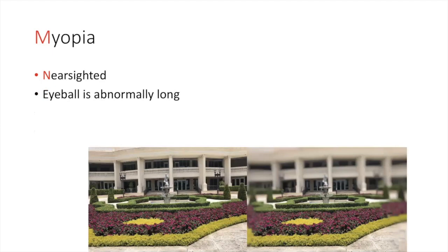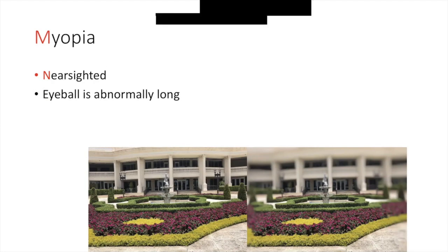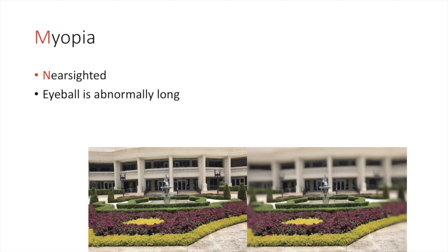Myopia is nearsightedness — objects that are near are seen clearly, however objects that are far are seen blurry. In this picture you see a beautiful garden with a statue and a beautiful resort that's clear, then the second image shows everything blurry — you can't really see it clearly. The eyeball is abnormally long.